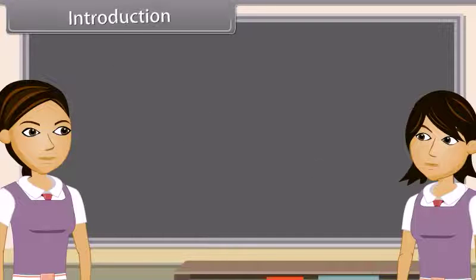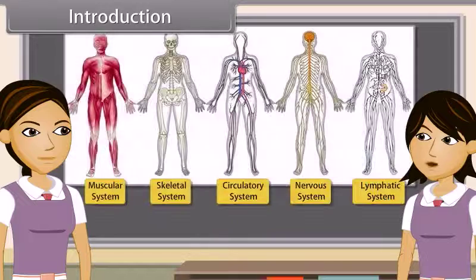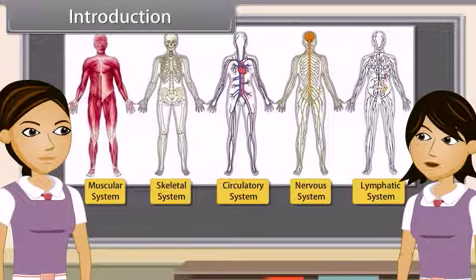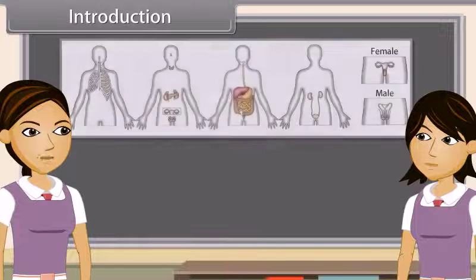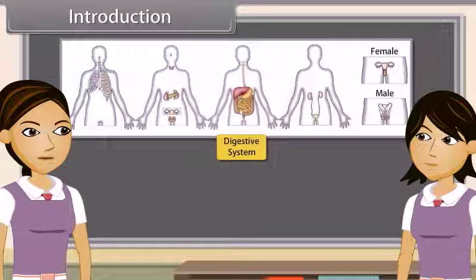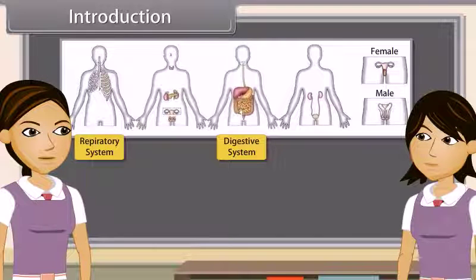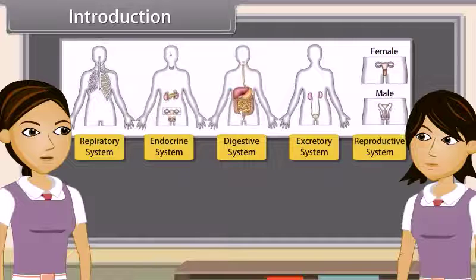As we already know, the body of higher animals like man is formed of a number of organ systems. Some of the examples are digestive system, respiratory system, circulatory system, excretory system, etc.